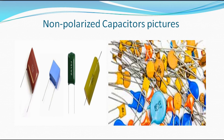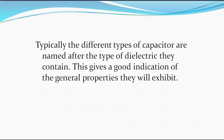This is the picture or image of non-polarized capacitors and this is how they look like. This one is called ceramic — all these ones you are seeing here are called ceramic. This one is called nano capacitor. We also have a mica capacitor and so on and so forth. Typically, different types of capacitors are named after the type of dielectric they contain, which gives a good indication of the general properties they exhibit.